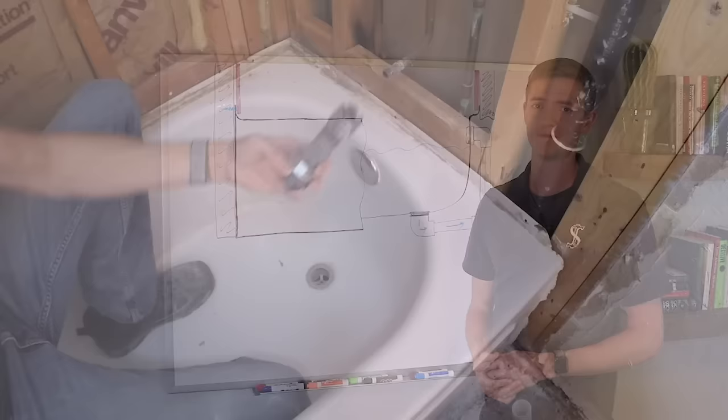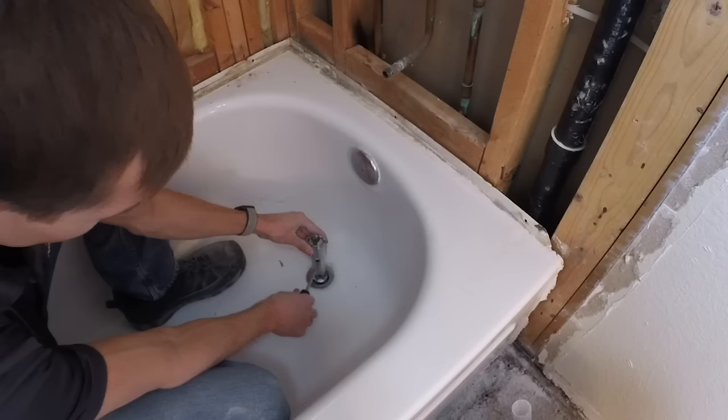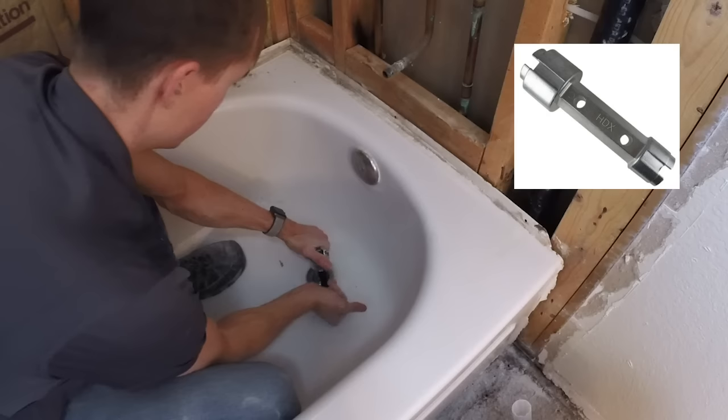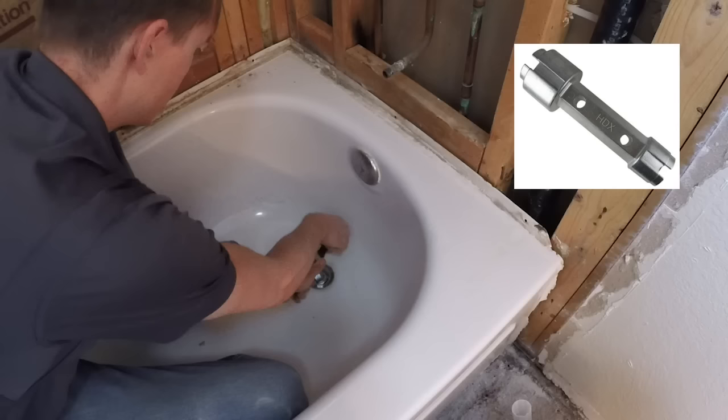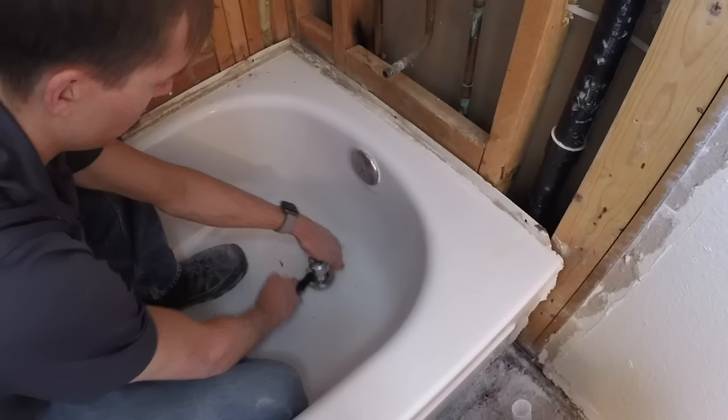To remove your old bathtub, you'll first need to remove any tile or other finished material around the tub which I've already done here. Then to remove the drain, grab a tub drain remover and twist it out. This tool isn't always necessary but it certainly makes the job a lot easier. You can find a tub drain remover at most improvement stores.